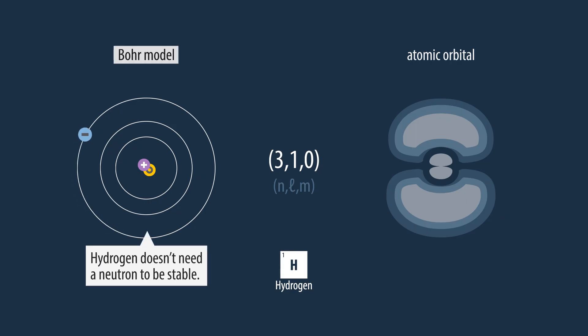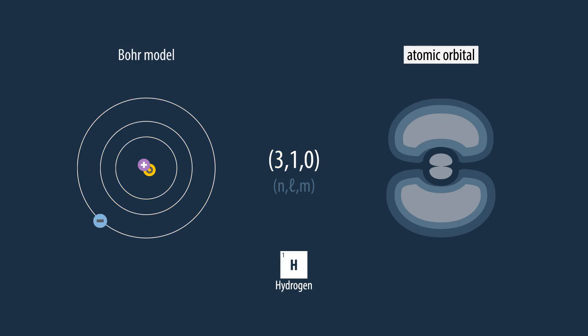In this example, the nucleus has one proton and one neutron. In the Bohr model, the electron is orbiting at a certain energy level, represented by an orbit further away from the nucleus. The hydrogen atom's atomic orbital with these quantum numbers looks like this.